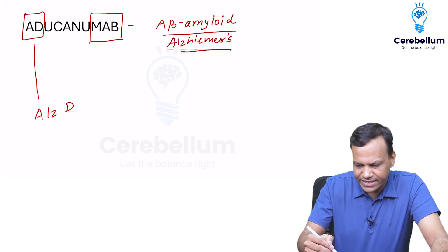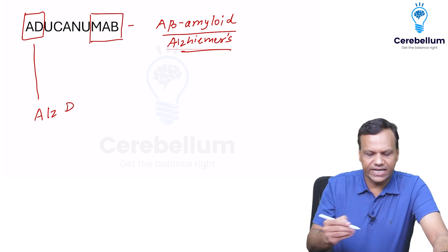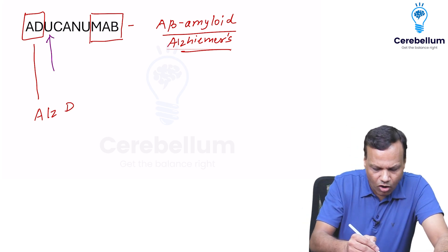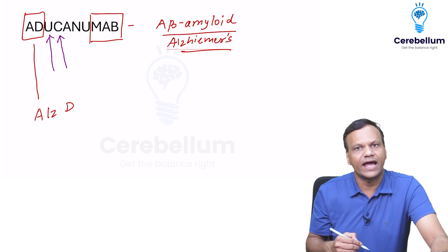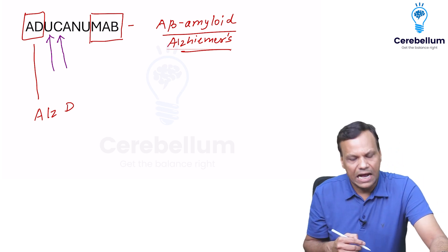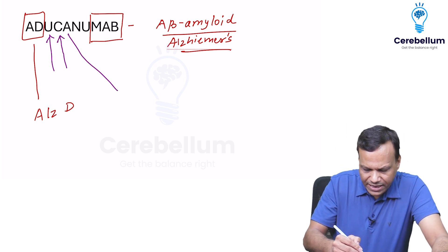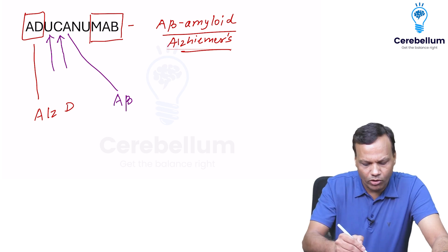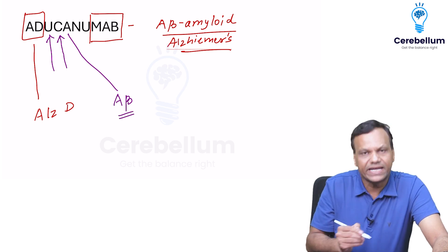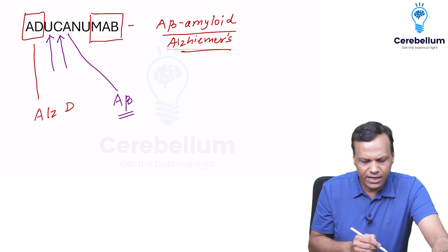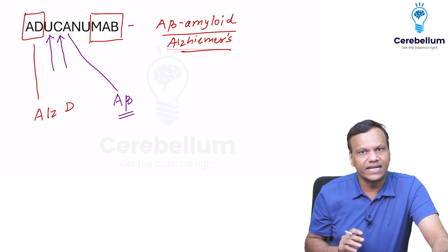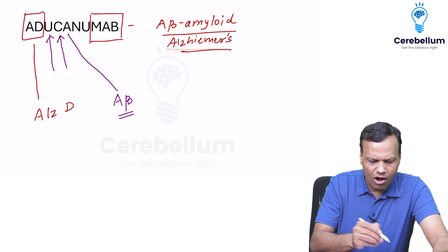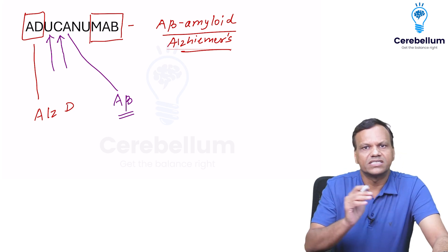This is the drug which will treat the underlying cause. UC means underlying cause, and what is the underlying cause? That is A-beta amyloid. So it is a monoclonal antibody against A-beta amyloid that treats the underlying cause of Alzheimer's disease.